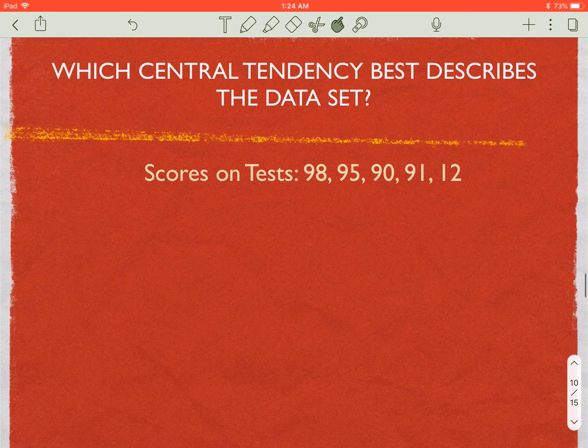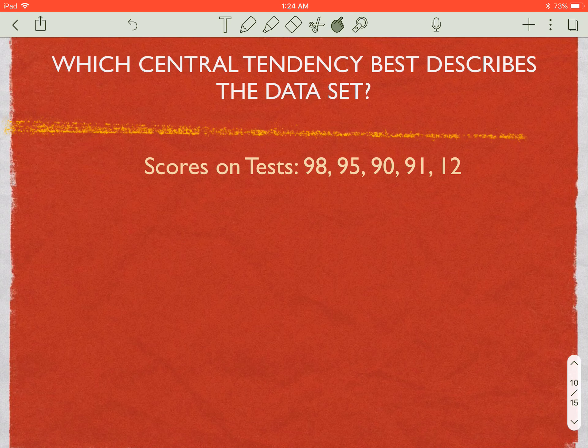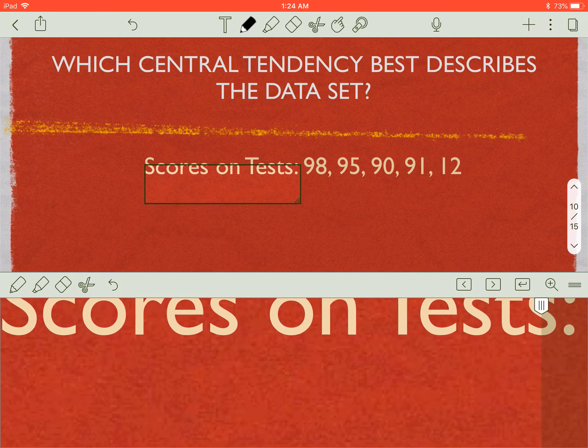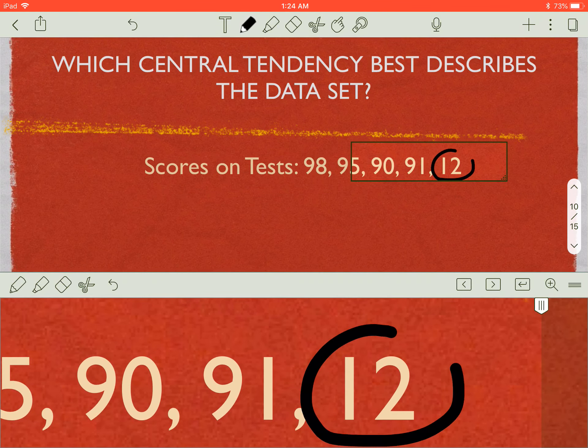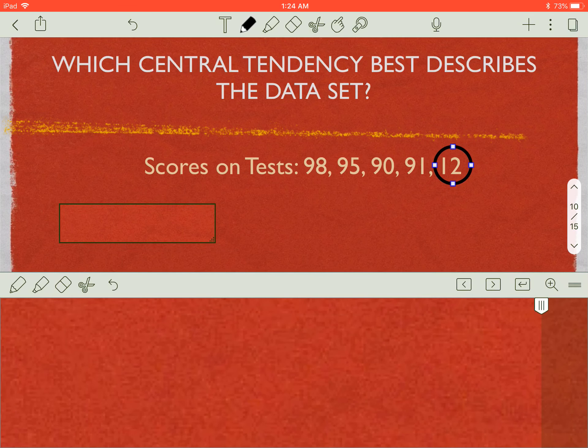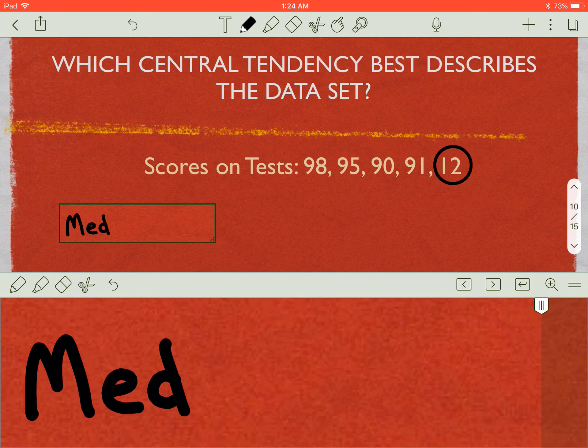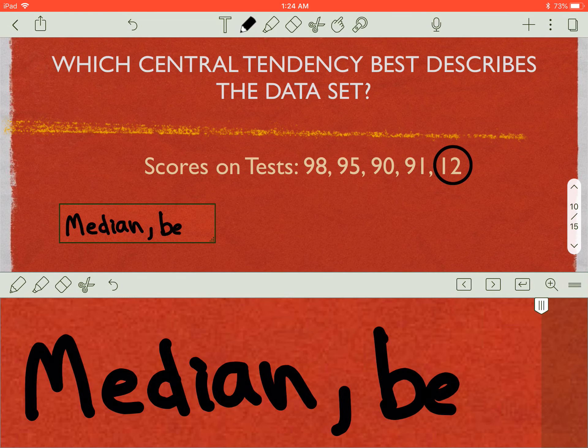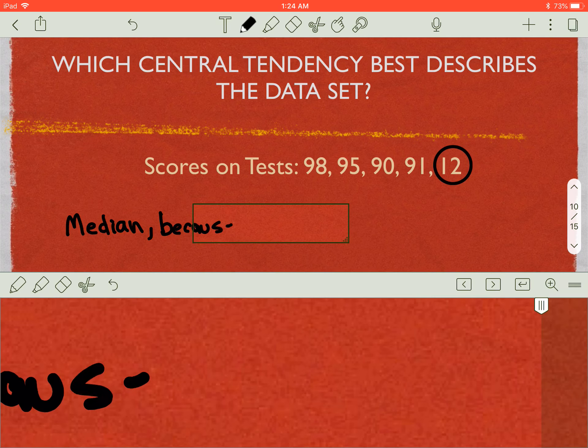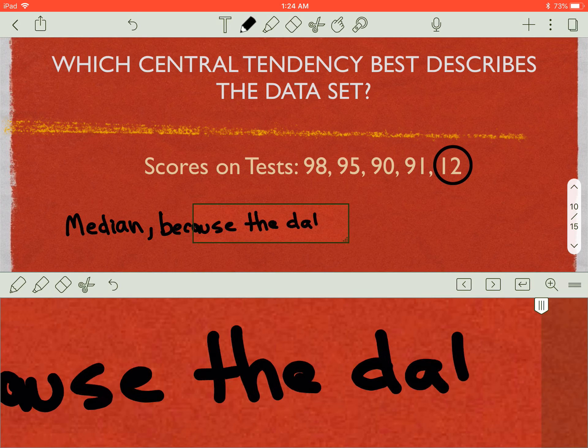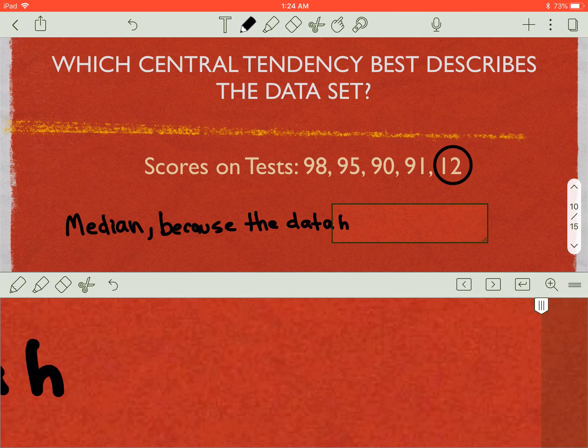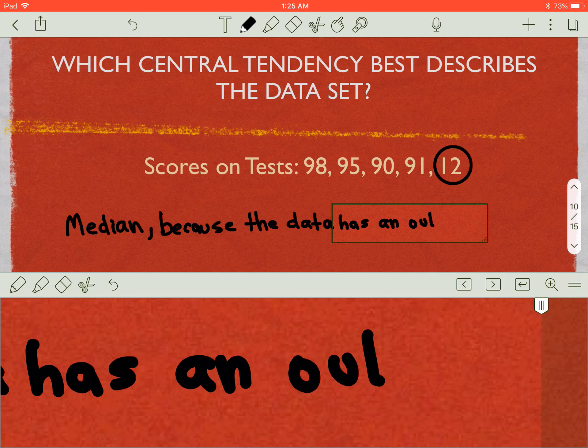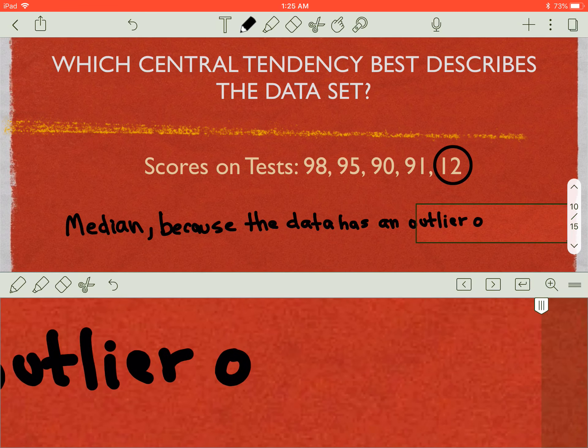So let's look at some examples right here. We don't have to figure out mean, median, mode. I'm just asking you, looking at it, which one do you think would best describe this data set? So I have scores on a test being 98, 95, 90, 91, and 12. And which one best describes the data set? Well, if I look here, this 12 is an outlier. So that would skew the mean. So what would be the best one here? It would be the median. And why? You'd simply say because the data set has an outlier of 12.